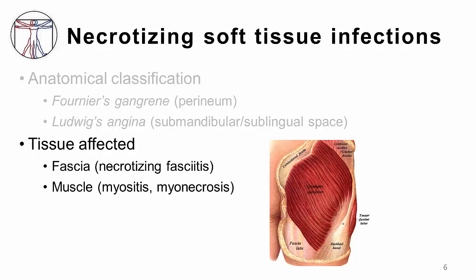The term fasciitis very generally refers to inflammation of the connective tissue that surrounds muscles, vessels, and nerves. Myositis refers to inflammation of muscle and its associated structures. Myonecrosis occurs when inflammation leads to muscle cell death. When triggered by an infection, fasciitis, myositis, and myonecrosis all share similar causative agents, and the treatments are largely the same.